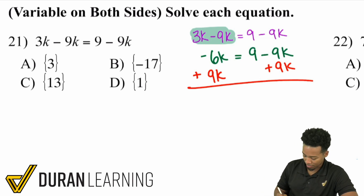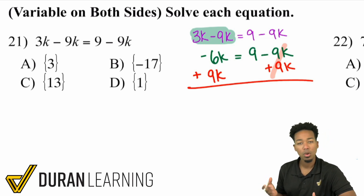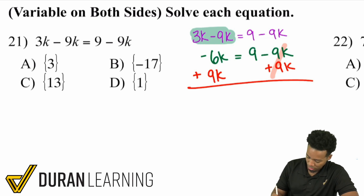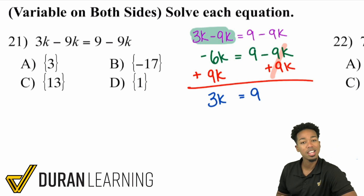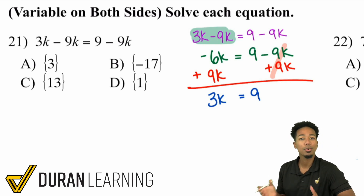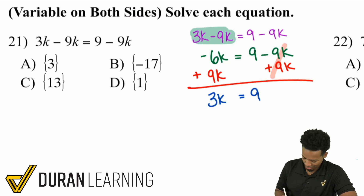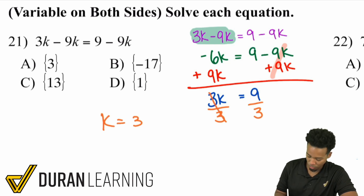By doing that, we're going to cancel on the right side. And then we have negative 6k plus 9k. When you add that together, that's the same thing as saying 9 minus 6, which is going to be 3k. So we have 3k equals 9 now. From here, now we can just work backwards — divide by 3 on both sides and we're done. Divide by 3, cancels out, and we have k equals 3.